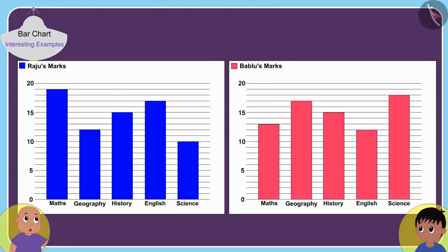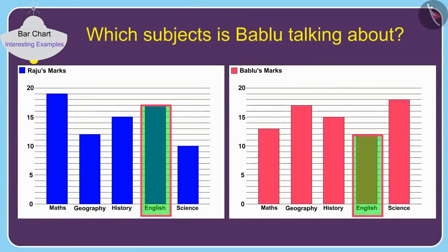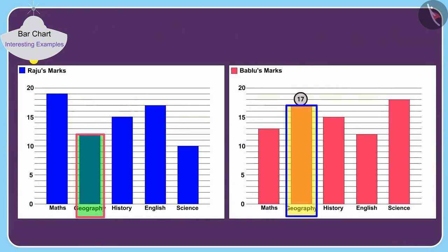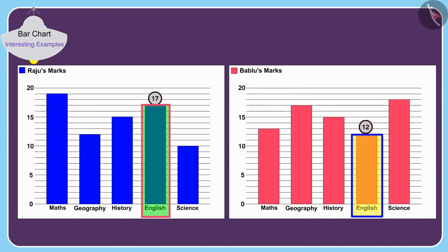Look Raju, I have got 5 marks more than you in this subject. And in this subject, you have got 5 marks more than me. Can you tell which subjects Babalu is talking about? In geography, Babalu has got 17 marks and Raju has got 12 marks. So in geography, Babalu has got 5 marks more than Raju. In English, Babalu has got 5 marks less than Raju.